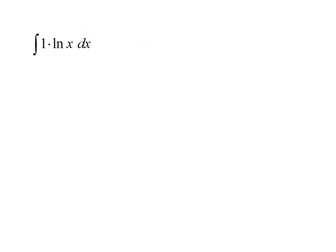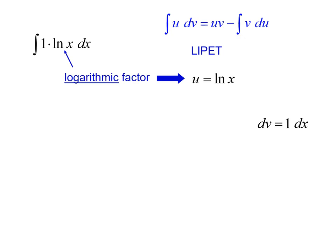Okay, so if we have 1 times natural log of x dx, well we have a log here, so u is natural log of x, dv is 1 dx, the derivative of natural log is 1 over x, the antiderivative of 1 is x.